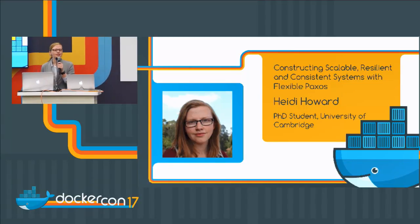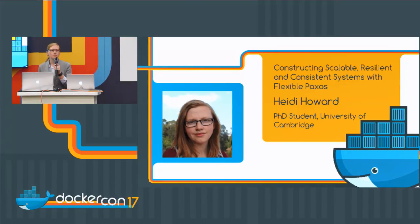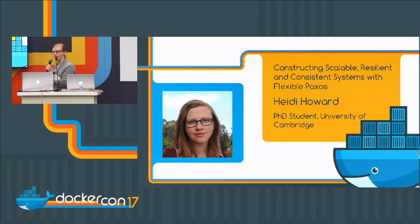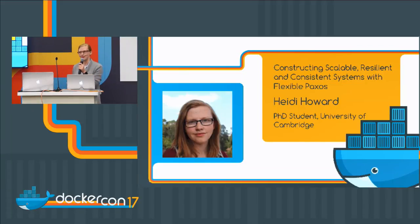Consensus is incredibly important. Once we can achieve consensus, we can build reliable distributed systems despite the fact that the underlying components that we're using are deeply unreliable. Anyone who's worked with distributed systems will know that that's the reality.